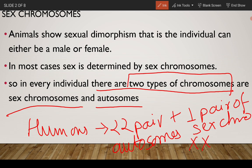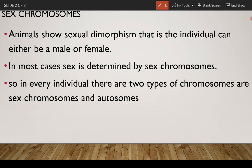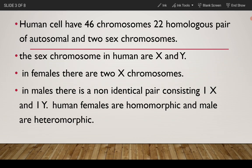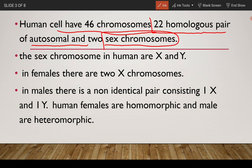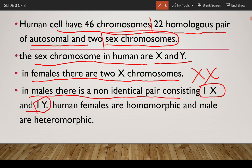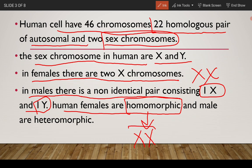The sex chromosome pair can be XX in females or XY in males. Human cells have 46 chromosomes: 22 homologous pairs of autosomes and two sex chromosomes. The sex chromosomes in humans are X and Y. Females have two X chromosomes — one pair. Males have a non-identical pair consisting of one X and one Y. Human females are homomorphic, meaning only one kind of sex chromosome (X) is present, while males are heteromorphic because they have one X and one Y.